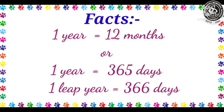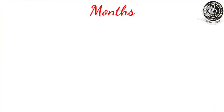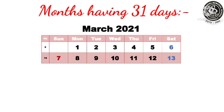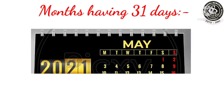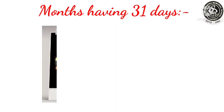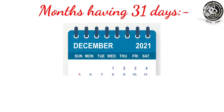Children, in the calendar you have seen that some months have 31 days and some months have 30 days. So, now let us see which months have 31 days first. The first month is January. Next, March, May, July, then August, October, and December.